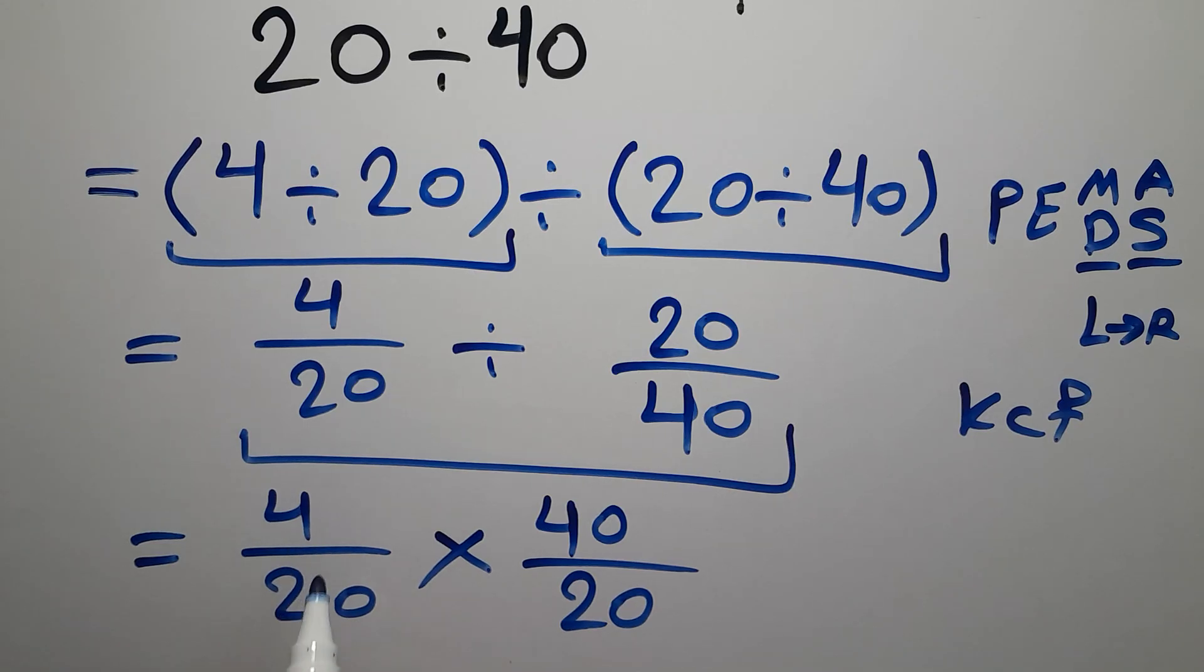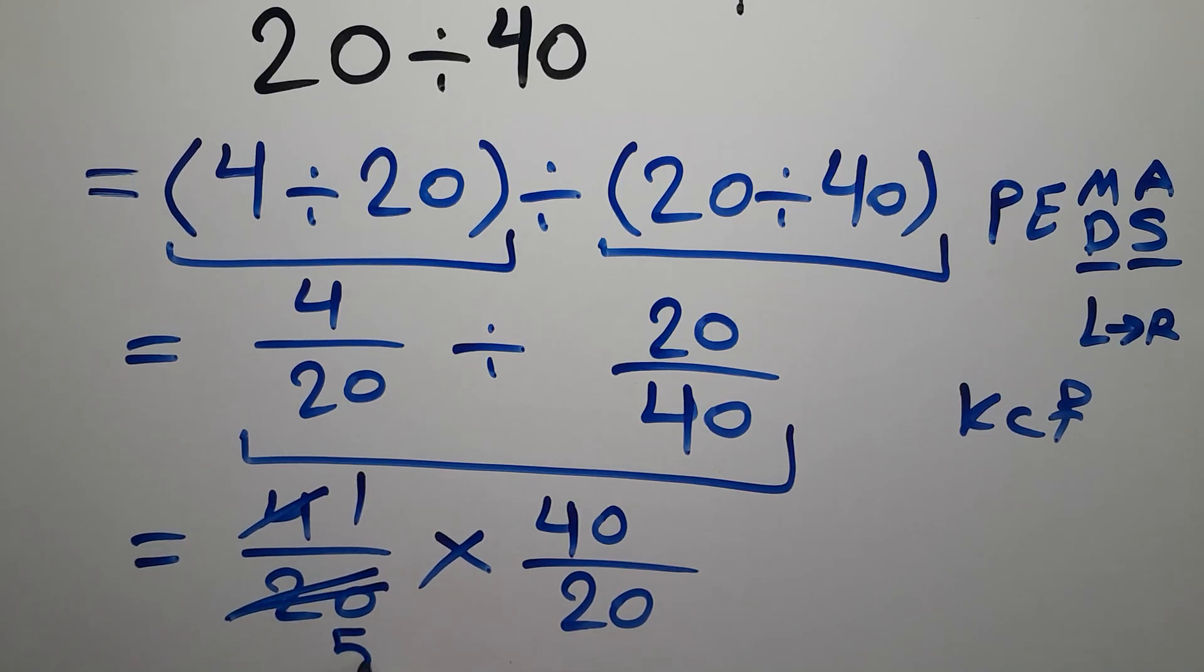Now we can simplify these fractions. 4 divided by 4 gives us 1, and 20 divided by 4 gives us 5. And here, 40 divided by 20 gives us 2, and 20 divided by 20 is just 1.